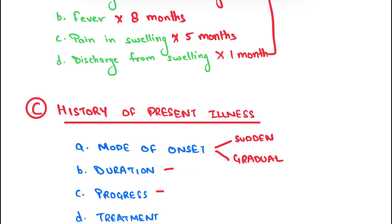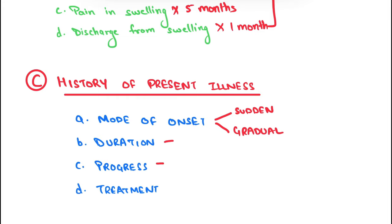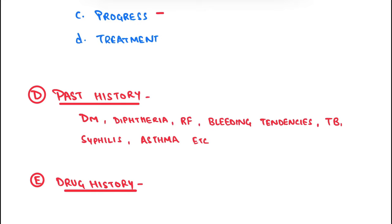Then ask about the progressing nature. For a swelling in the neck, ask about the initial size and the present size. Also ask about the treatment the patient may have received — the mode of treatment and the doctor who treated them. To know the mode of onset, ask: 'How did the trouble start?' To understand disease progression, ask: 'What is the next thing that happened?' Record everything in chronological order in the history of present illness.